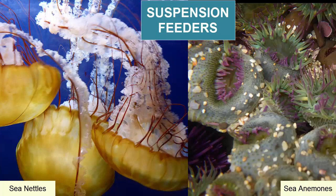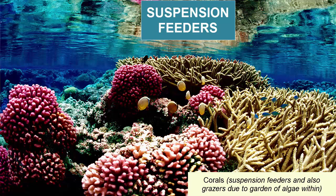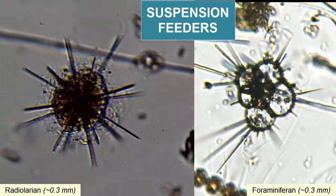Suspension feeders are easily confused with filter feeders, but the major difference is that suspension feeders are passive and wait until another organism has fallen into a spine, net, web, trap, or tentacle. Examples include most cnidarians — anemones, jellyfish, and corals — as well as radiolaria and foraminifera.